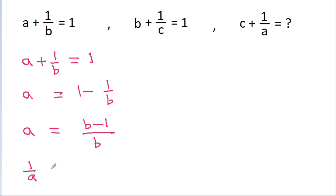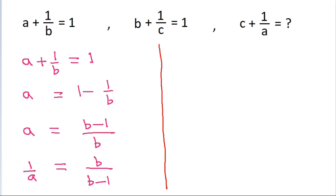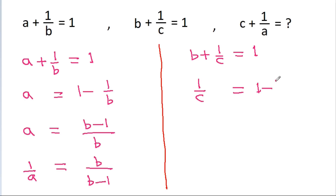So 1 by a will be equal to b by b minus 1. We have also given that b plus 1 by c is equal to 1, so 1 by c is equal to 1 minus b, and c will be equal to 1 by 1 minus b.